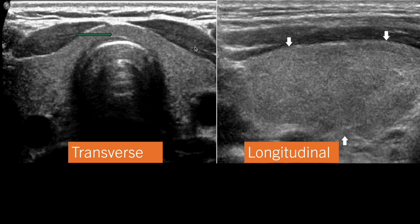The thyroid gland is normally hyperechoic and homogeneous. This entire hyperechoic structure is the thyroid gland. In front of the thyroid gland we can see this hyperechoic structure — these are the strap muscles. There are two strap muscles on the anterior aspect of the thyroid gland: the sternothyroid muscle and the sternohyoid muscle. On the lateral side of the thyroid gland we can see the carotid vessels.